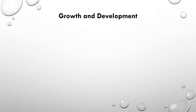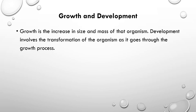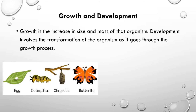Now let's see the next living characteristic: growth and development. This is the last living characteristic I am going to discuss. Growth is the increase in size and mass of the organism, and development means the transformation of the organism as it passes through different growth stages of its life. For example, in the life cycle of a butterfly, it starts as an egg, hatches into a caterpillar, forms a cocoon, and then develops into a butterfly.